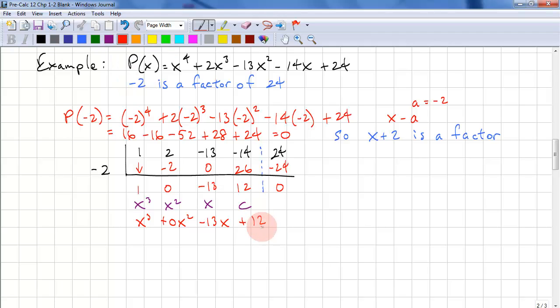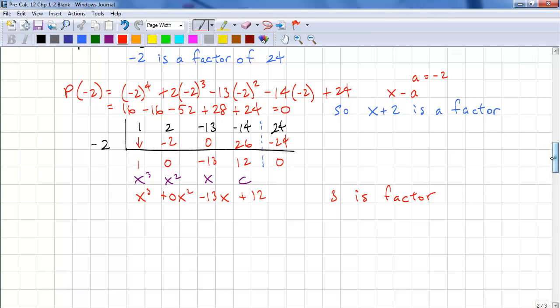Now we are looking for factors of 12. Well, 3 is a factor. So let's try 3. We'll call this q(x). q(3) is 3 cubed minus 13 times 3 plus 12. So we have 27 minus 39 plus 12, and that equals 0.